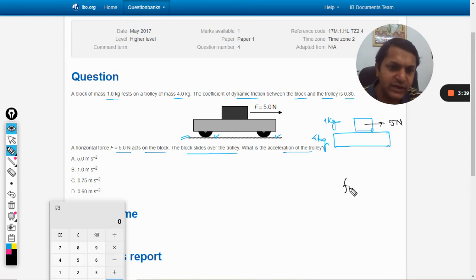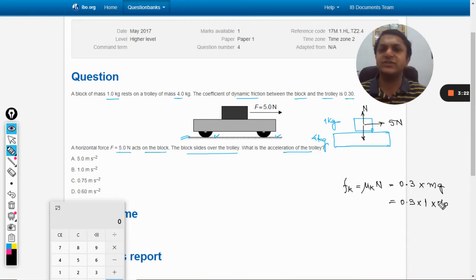So we can directly find what will be that friction. That friction will be μk times N, so μk is 0.3 into the normal reaction. The normal reaction will be equal to m times g. Mass is given as 1 kg, g is taken as 10, so it will be 3 newton.